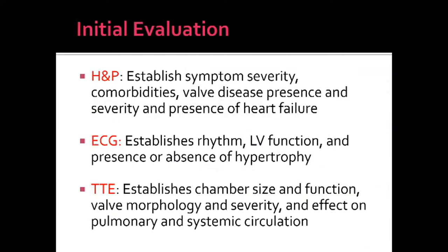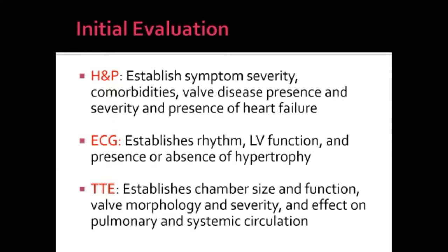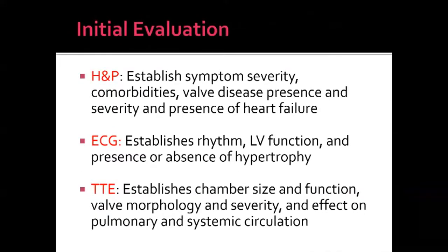How do we evaluate patients who may have valvular heart disease? Initial evaluation includes history and physical to establish symptoms, comorbidities, and whether known valve disease exists. The ECG helps identify secondary effects on heart rhythm and hypertrophy. Echocardiography is the cornerstone of initial evaluation, providing hemodynamic information, identifying which valves are involved, severity of disease, and effects on pulmonary and systemic circulation.